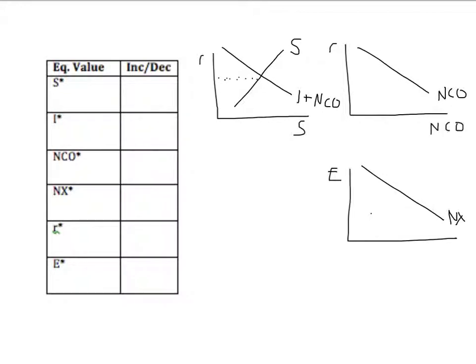Now we can find the initial equilibrium interest rate and real exchange rate. The loanable funds model shows us our initial real interest rate. Then we go over and find the initial net capital outflow. And then we just bring that down and use it to draw in our supply curve on the market for foreign exchange. That tells us our initial equilibrium real interest rate.